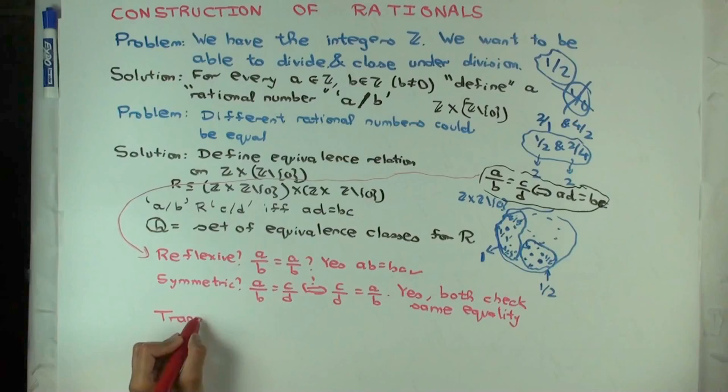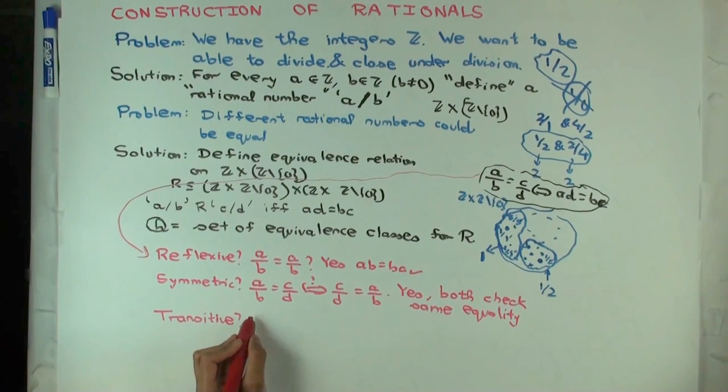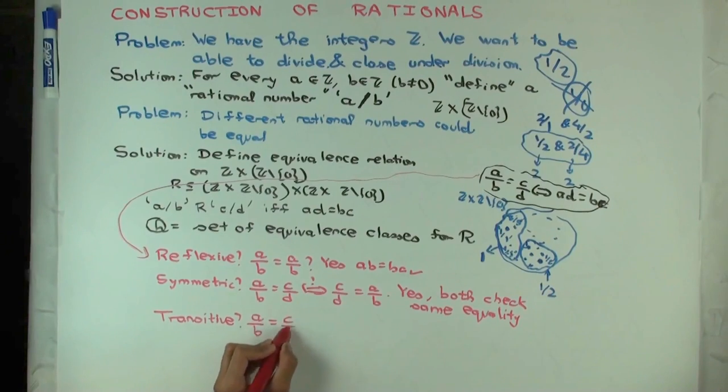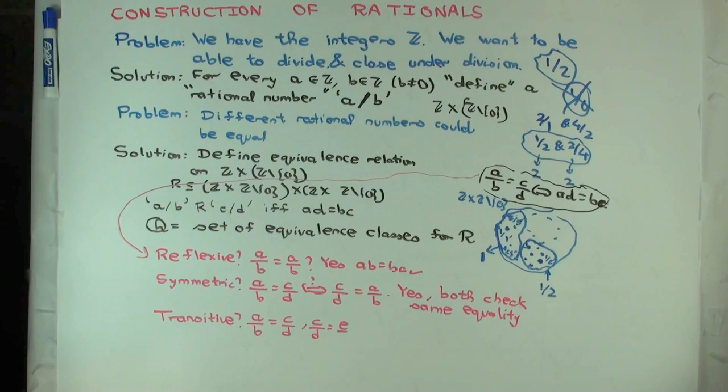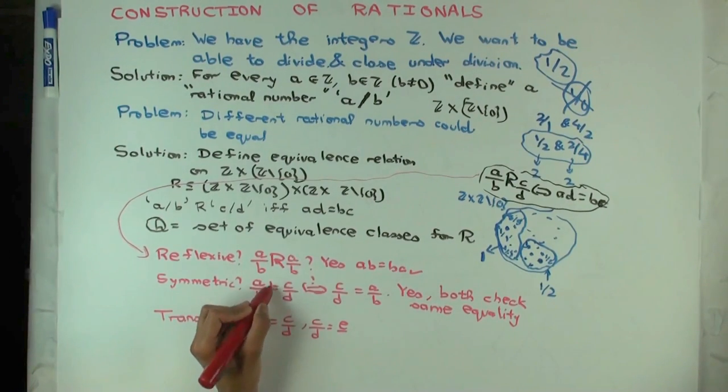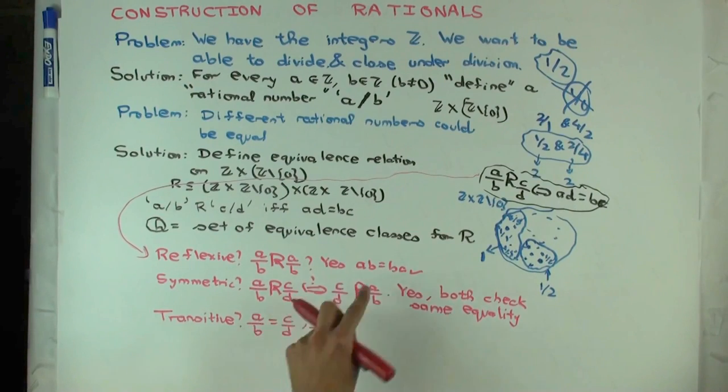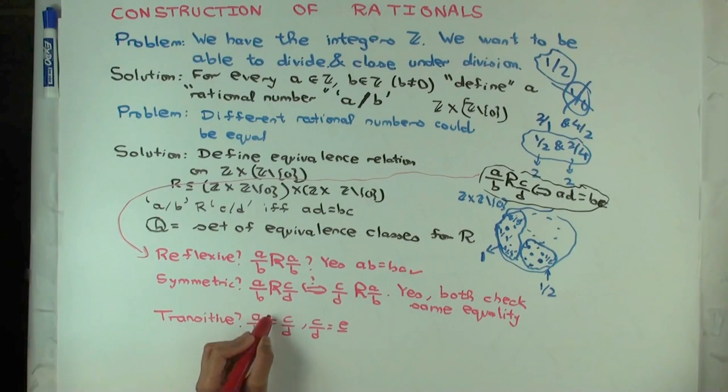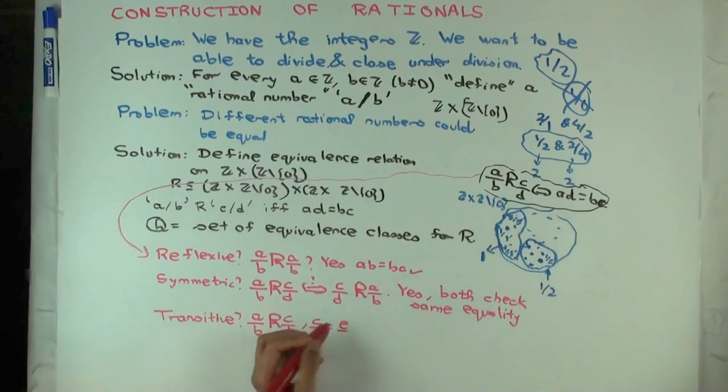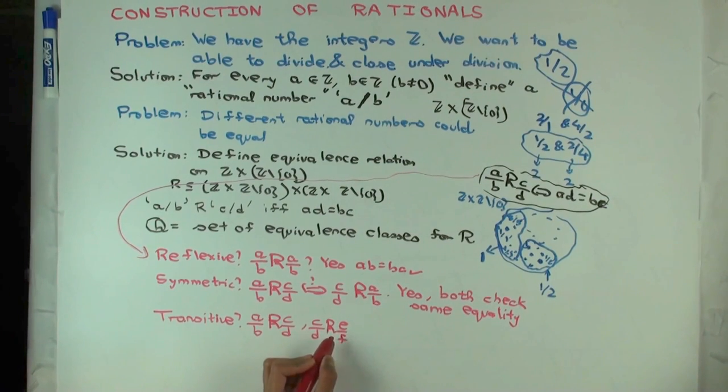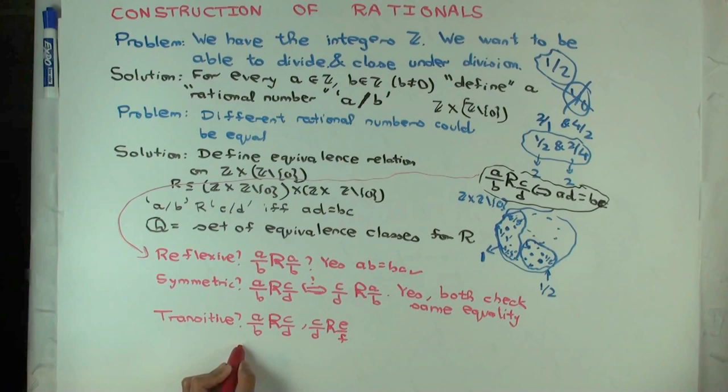And transitive. So, this is a little more thinking is needed. So A/B R C/D and C/D R E/F. What does that tell you? Well, this tells us that AD equals BC. This tells us that CF equals DE.